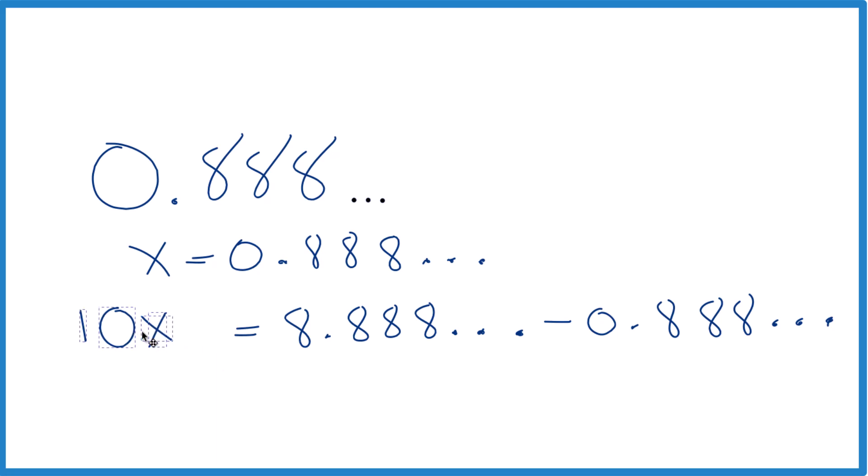Let's move this over. Because x is equal to 0.888 repeating, this right here is the same thing as x. So let's just subtract x on this side.